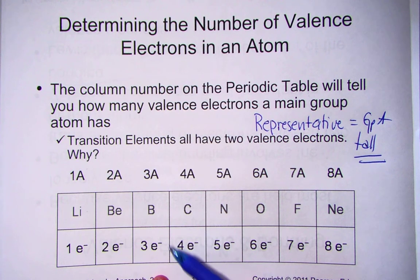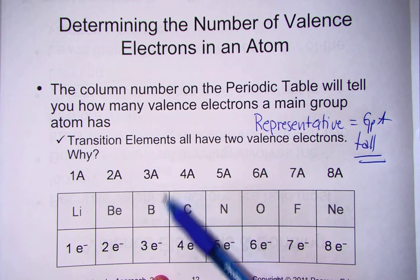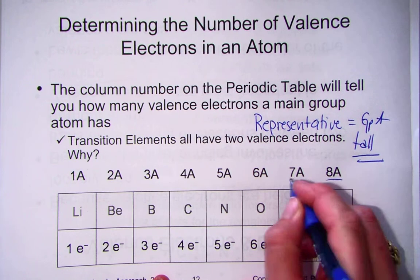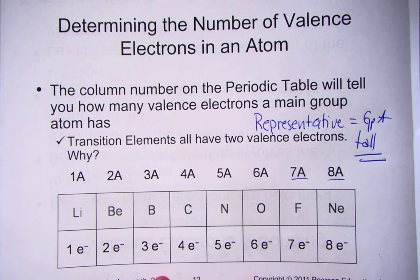The next tall column is Boron's family. Group 3A has three valence electrons, and so forth through the trend. By knowing the group A number, we now know how many valence electrons.